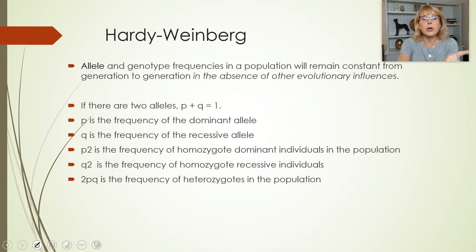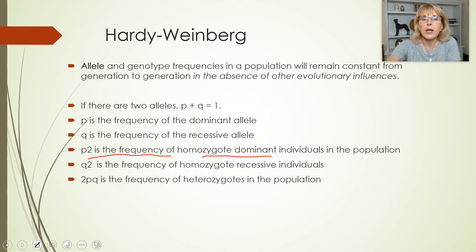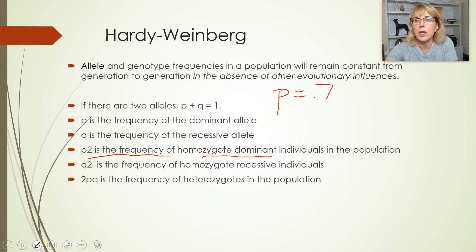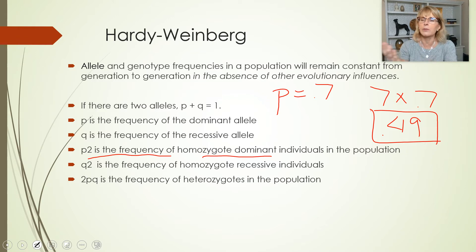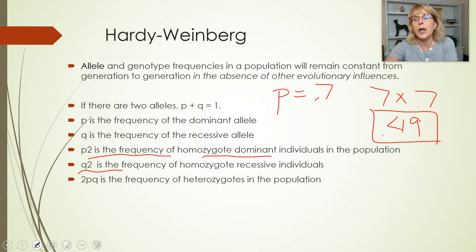p² is the frequency of homozygous dominant individuals. So if the frequency of p in the population is 0.7, then p² is 0.7 times 0.7, which equals 0.49. So if the frequency of the dominant allele is 0.7 and you want the frequency of homozygous dominant individuals in the population, multiply 0.7 times 0.7.